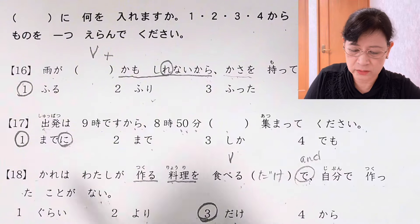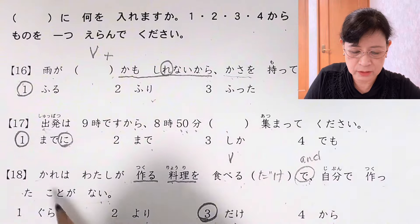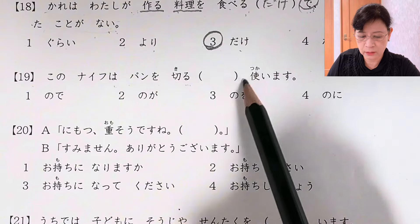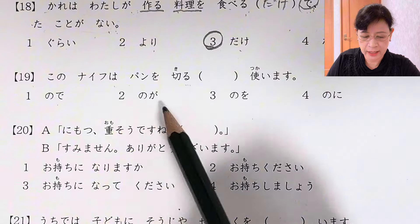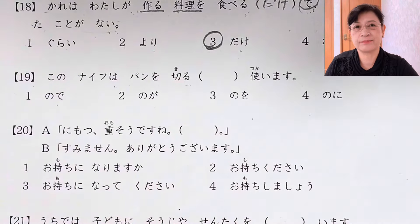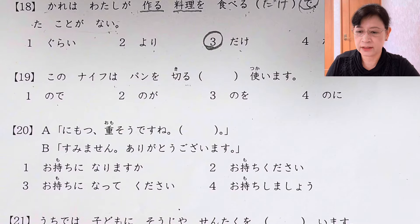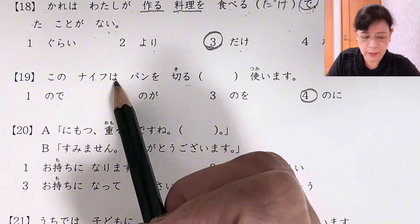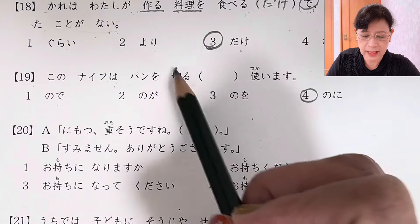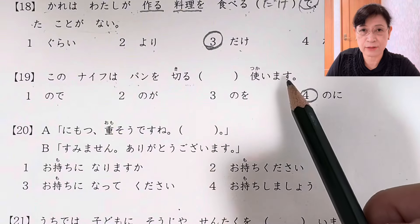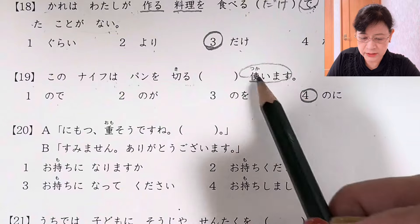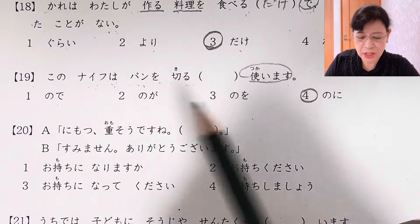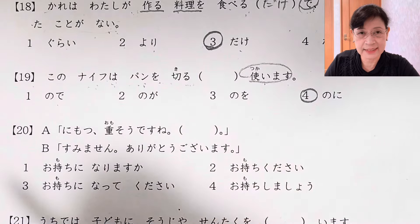He only eats what somebody prepares or cooks. So 食べるだけで - only eat. We have verb plus だけ, which means only. And this で here is 'and', it connects the two sentences. He only eats the dish that I cook; he has never cooked for himself. Next sentence: このナイフはパンを切るかっこ使います.